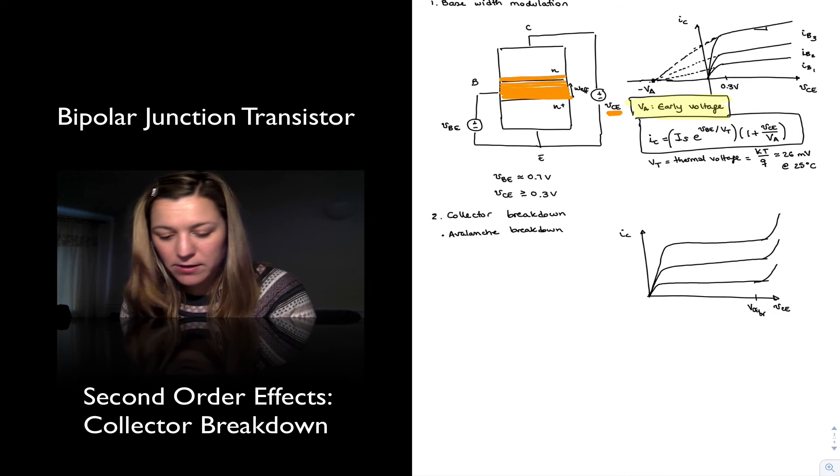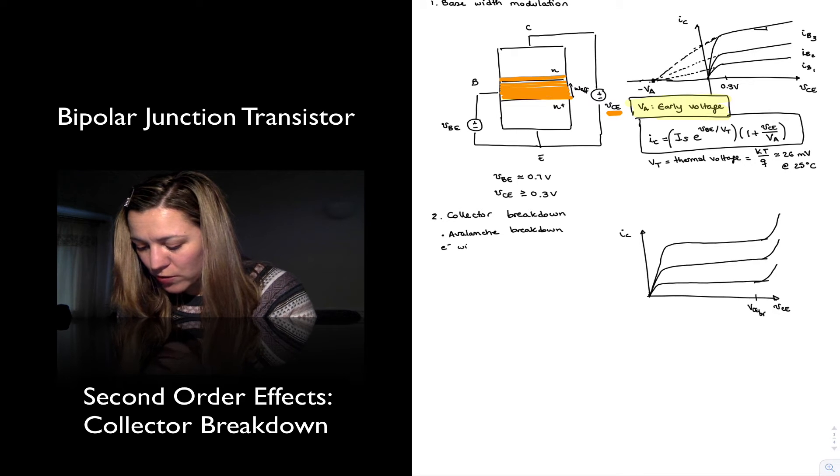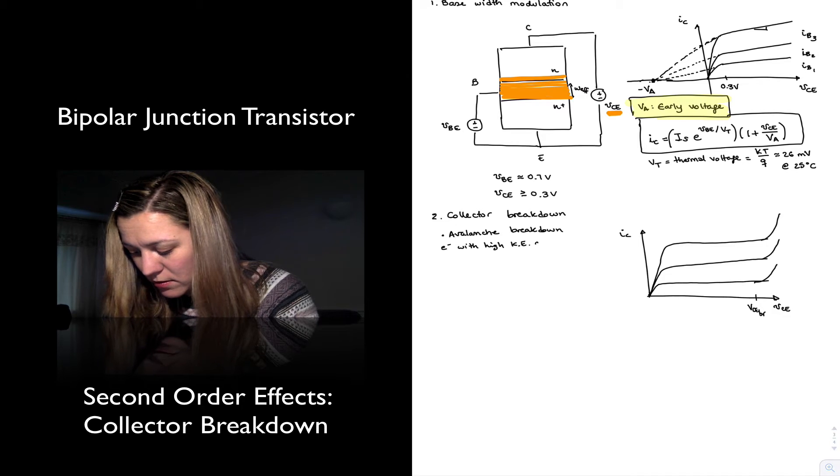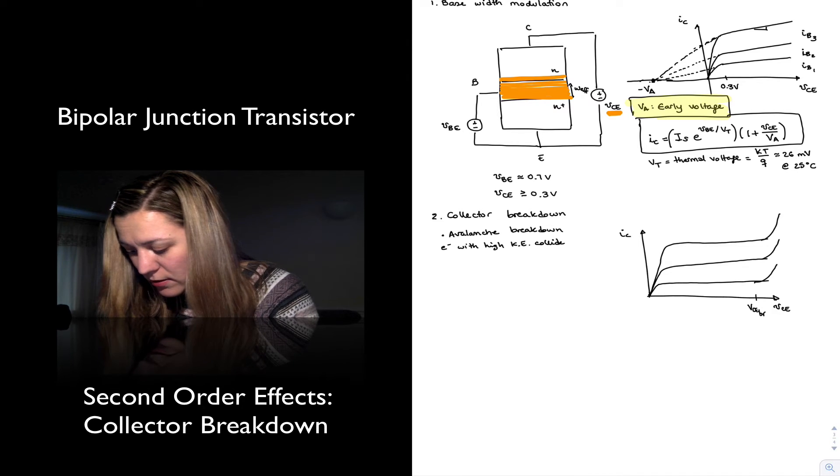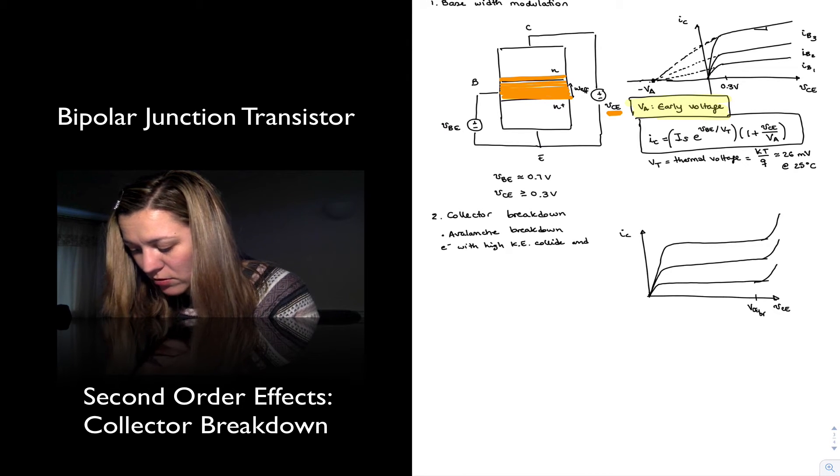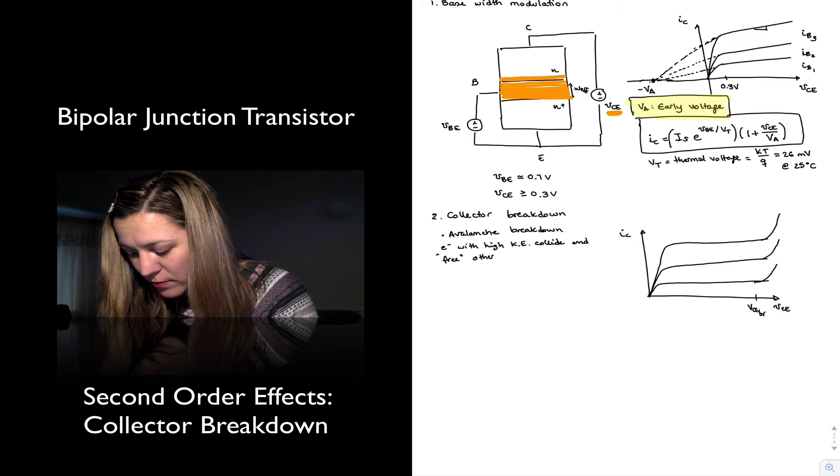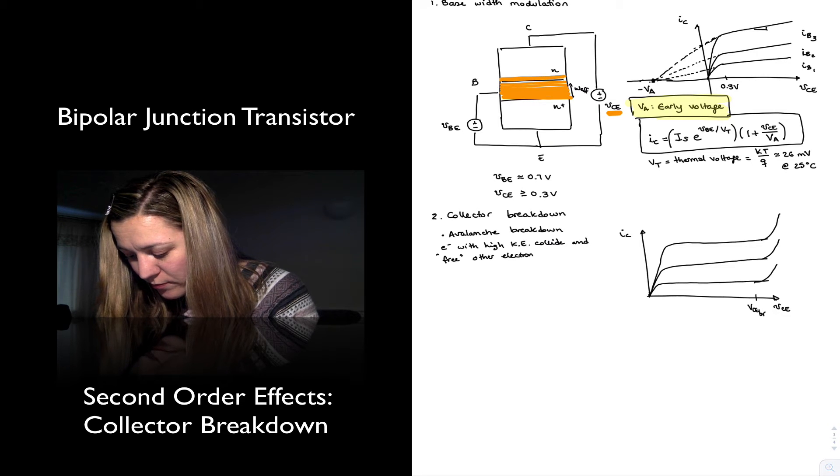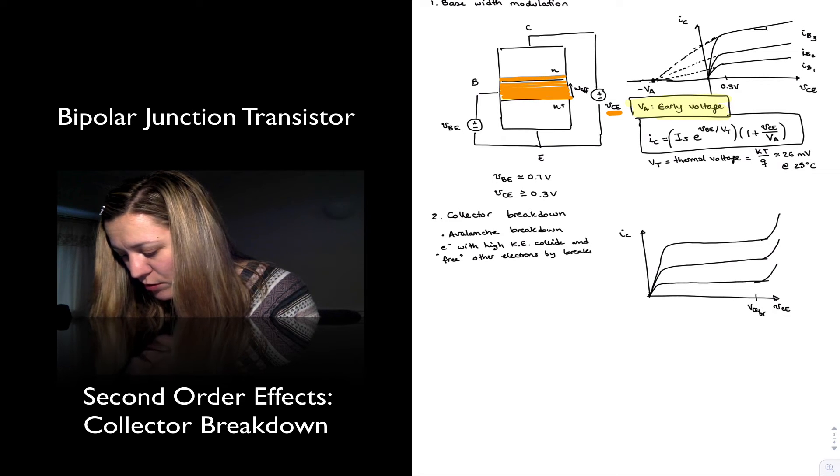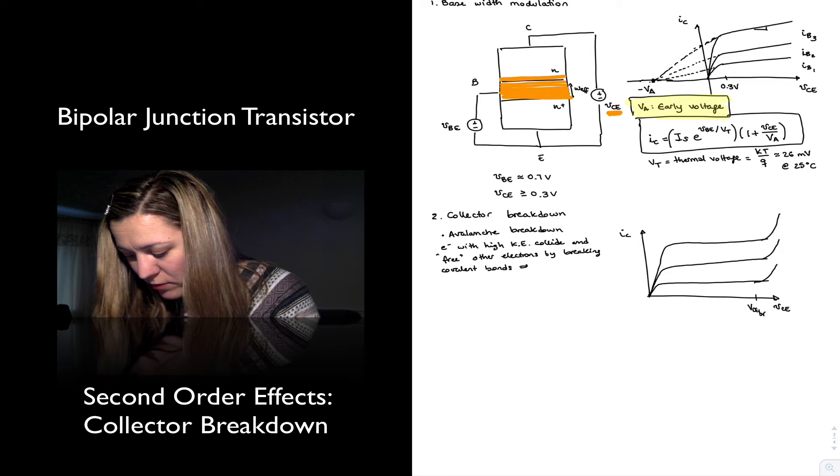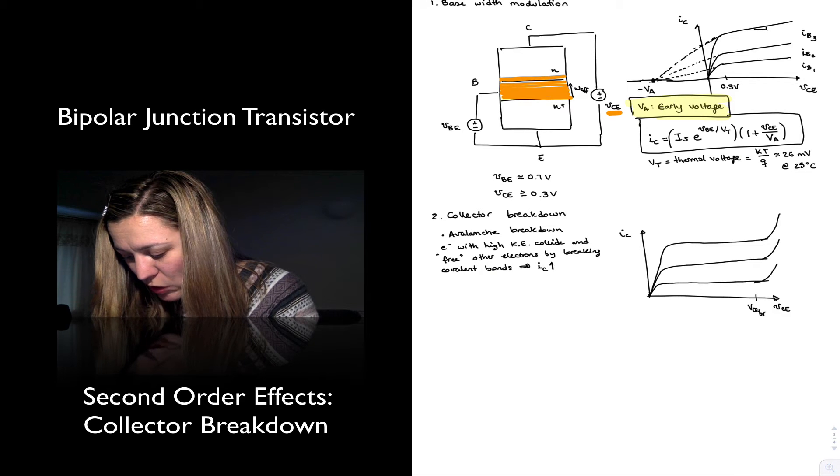So we could say electrons with high kinetic energy collide and free other electrons by breaking covalent bonds, and therefore the collector current increases.